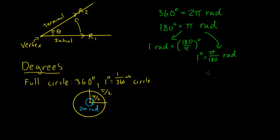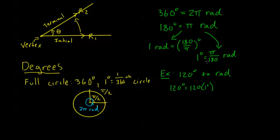Let's do a couple of quick examples. Say I have 120 degrees and I want to convert that to radians. 120 degrees equals 120 times 1 degree, and I know 1 degree is π/180 radians, so this equals 120 times π/180 radians. Simplifying: the zeros cancel to give 12/18 π, and since 12 and 18 are both divisible by 6, this simplifies to 2π/3 radians.